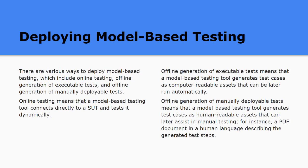The other way offline generation works is it creates human-readable assets that can be later used in manual testing — for instance, a PDF document in human language describing the generated test steps.